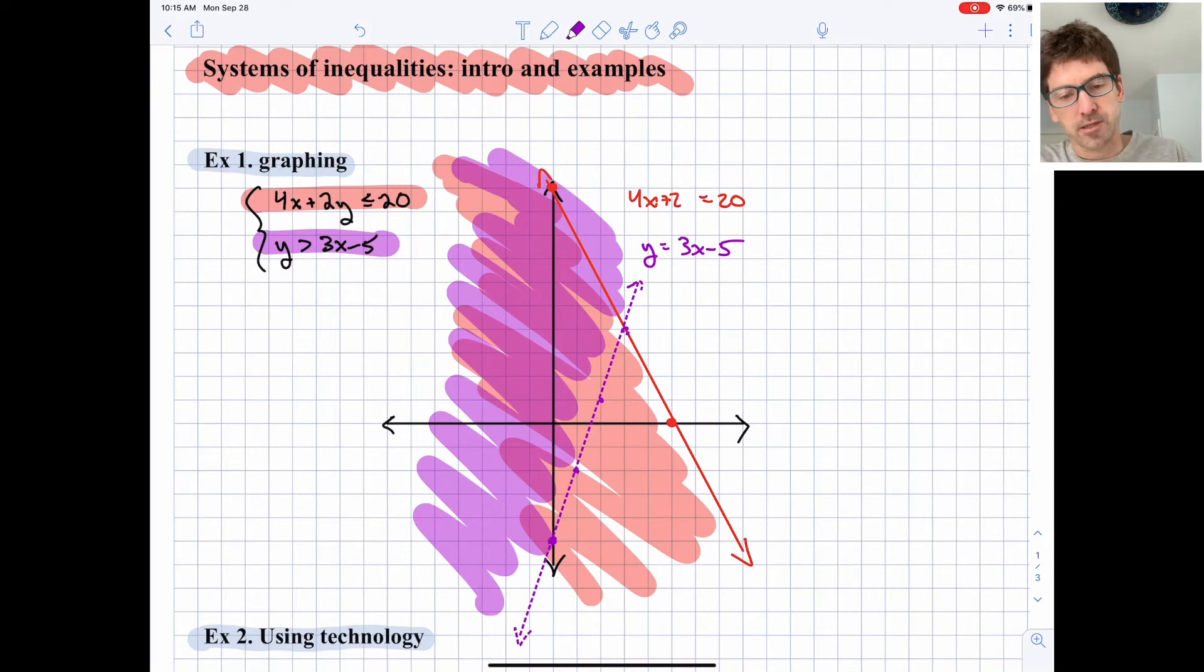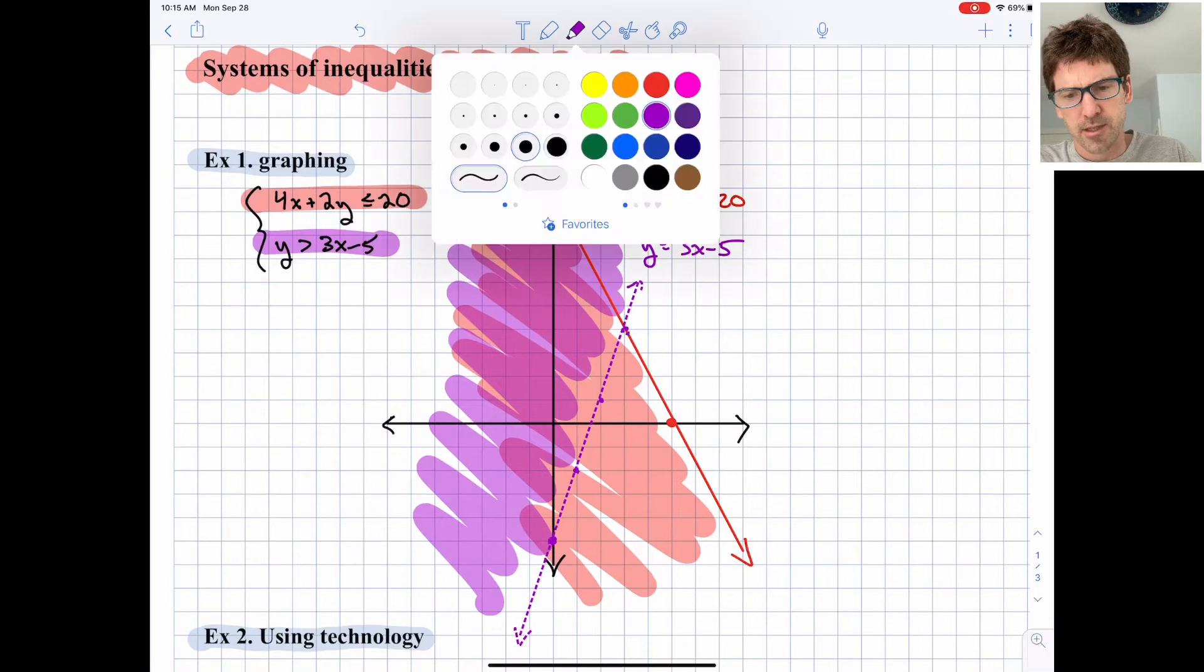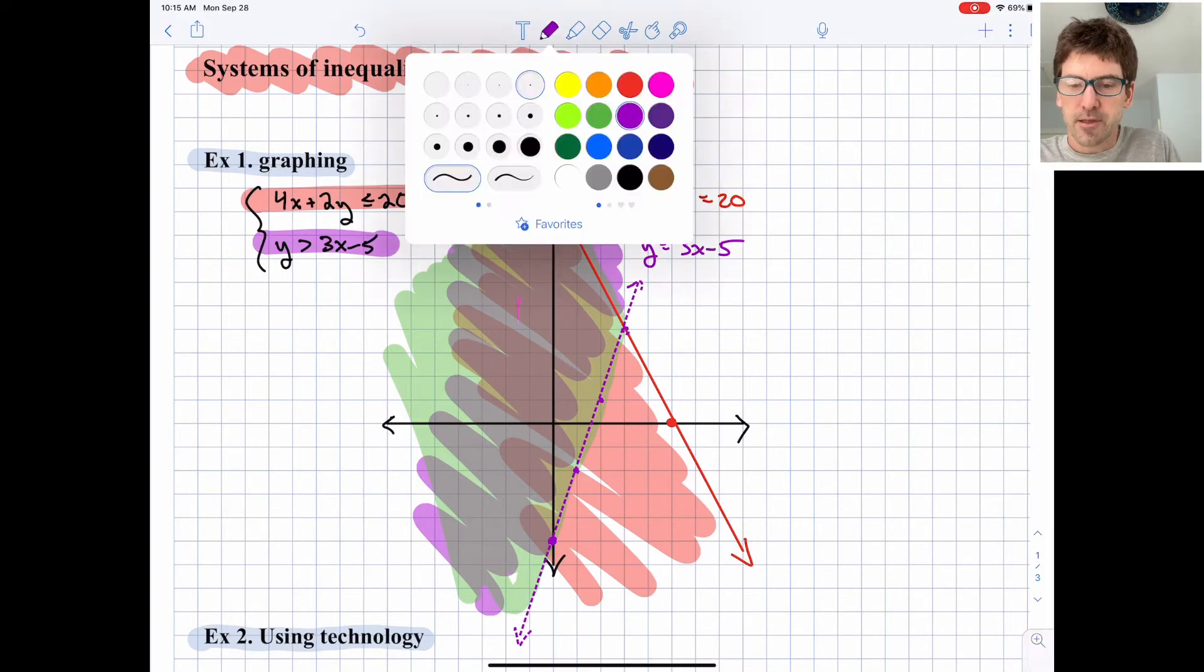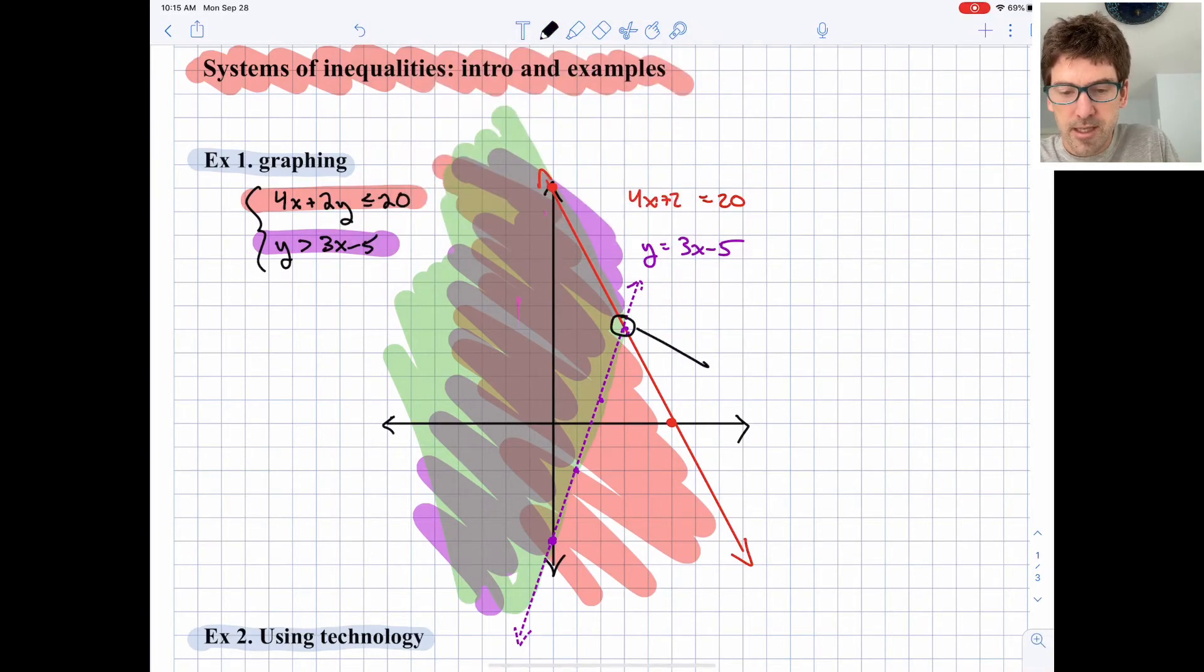Our solution to this system of inequalities, I'll shade in green here, is this area. Everything that has an overlap of purple and red. There are some zones that just have red and some zones that just have purple. We're looking for the area that includes both. We would include the red boundary line in our solution but not the purple boundary line. This point is the intersection of the two boundary lines, but it's actually not a point on the solution because all points on the purple dotted line are not actual solutions. We're not looking for an intersection point here; we're looking for a zone, a region, a two-dimensional area of overlapping shaded areas.